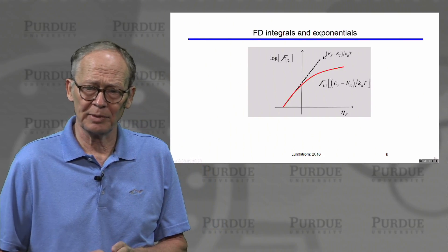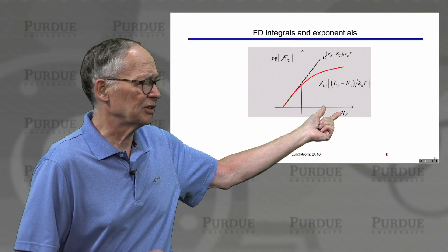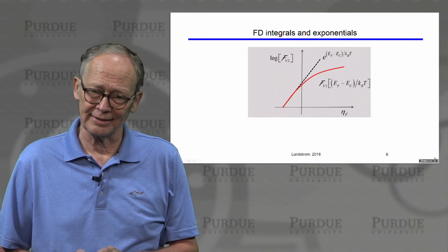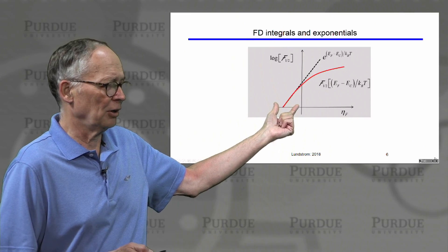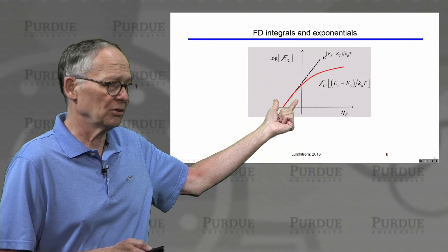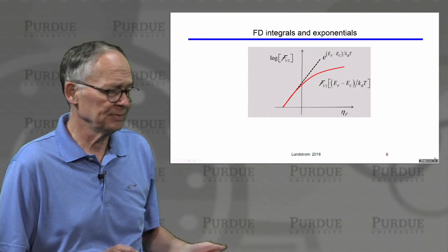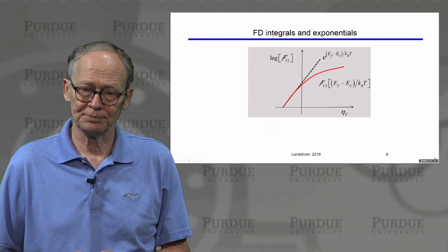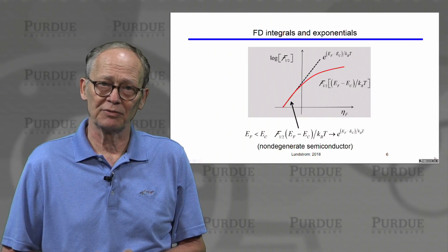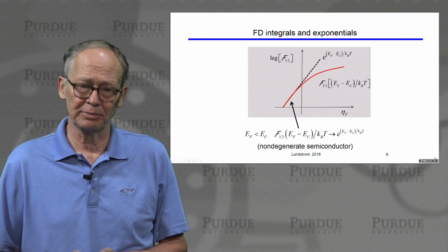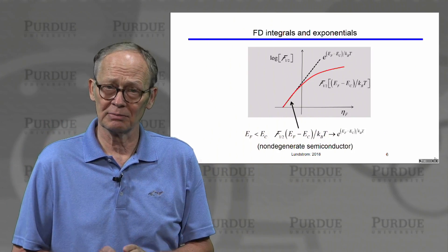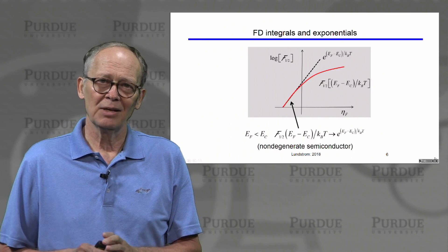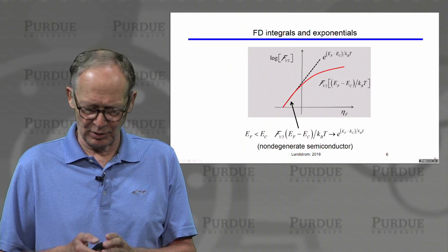If we look more carefully at this Fermi-Dirac integral and plot it as a function of its argument eta — the Fermi energy with respect to the bottom of the conduction band in units of kT — then when the Fermi energy is very far below the band edge, the Fermi-Dirac integral equals the exponential. As we go to higher energies, the Fermi-Dirac integral is always less than the corresponding exponential. A non-degenerate semiconductor is one in which the Fermi level is well below the bottom of the conduction band, so the Fermi-Dirac integral reduces to an exponential. That makes it easy to calculate the quantities we're interested in. In this class, we will be making use of the non-degenerate approximation extensively.